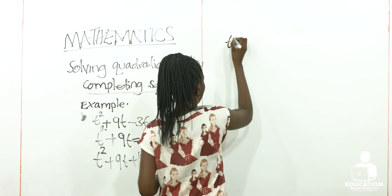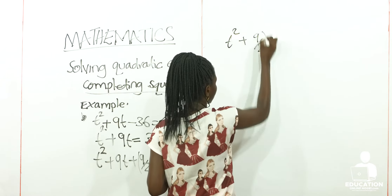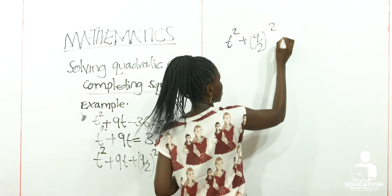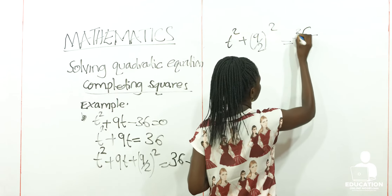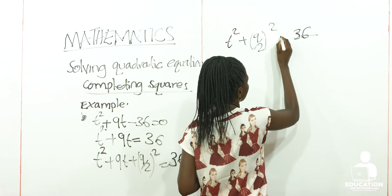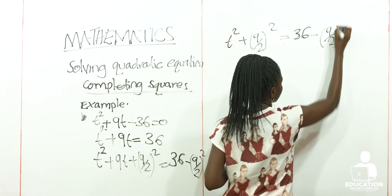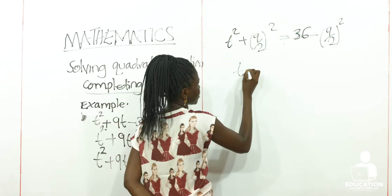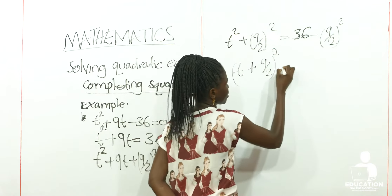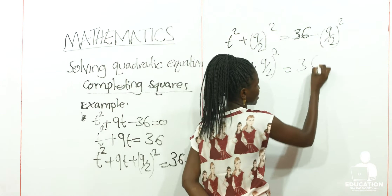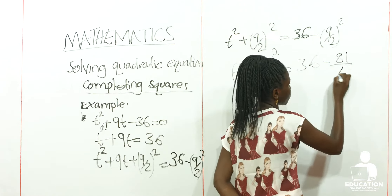Here now we are going to have t squared plus (9/2)² is equal to 36 minus (9/2)². This is simply having (t + 9/2)² is equal to 36 minus 9 squared, that's 9 times 9 to give us 81 over 4.